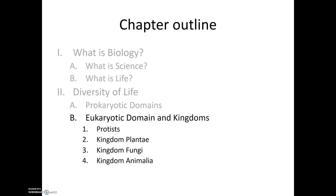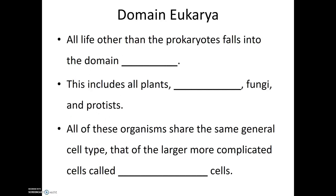Let's talk a bit about protists, which are the simplest of the eukaryotic organisms. All life other than prokaryotes falls into domain Eukarya. This includes all plants, all animals, all fungi, and all protists. All of these organisms share the same general cell type — the larger and more complicated cells called eukaryotic cells.